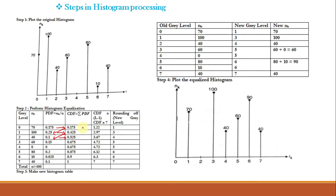Once you obtain the CDF values, multiply them by L minus 1. Here L equals 8, so L minus 1 equals 7. Multiplying each CDF value by 7: 0.175 × 7 = 1.22, 0.425 × 7 = 2.97, and so on up to 7. These are the new gray levels, but we must round them off: 1.22 rounds to 1, 2.97 rounds to 3, 3.67 rounds up to 4, 4.72 rounds up to 5, 6.12 rounds to 6, 6.3 rounds to 6, and 7 stays as 7.